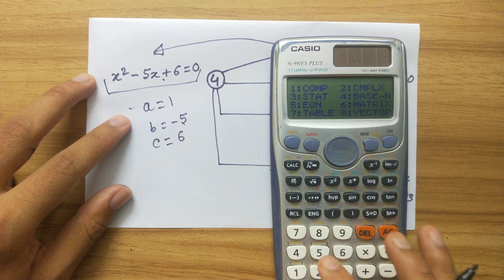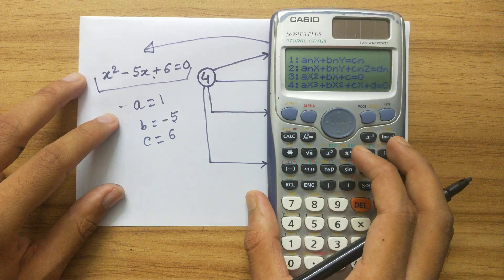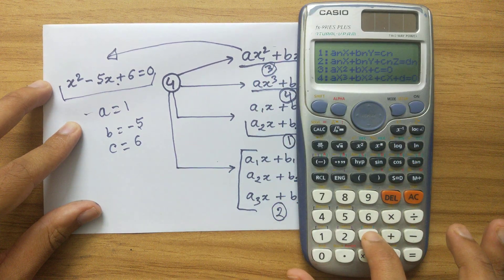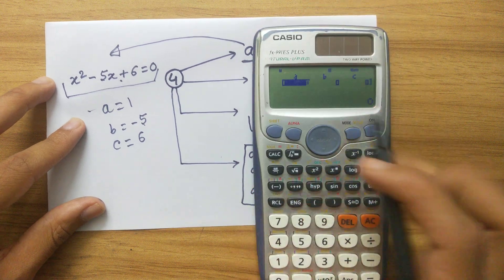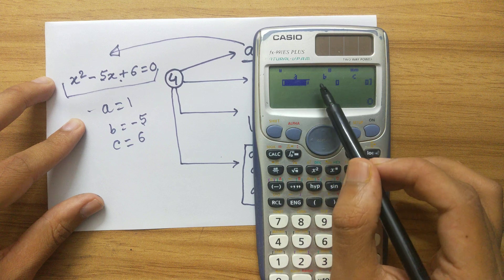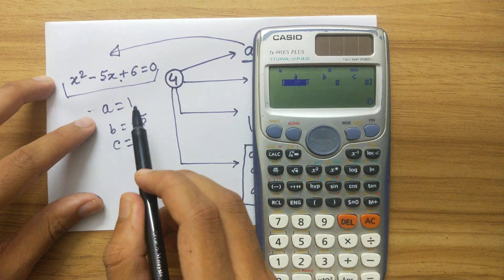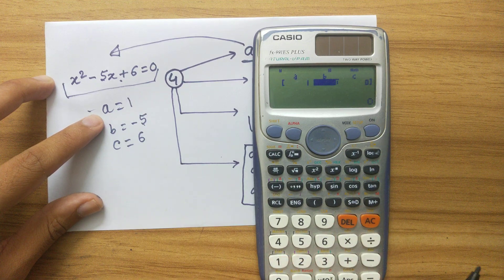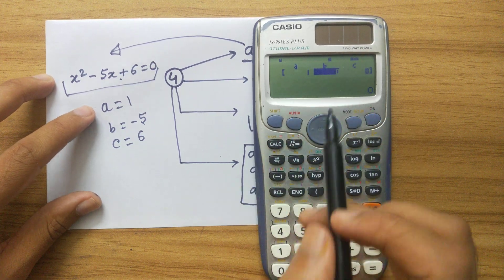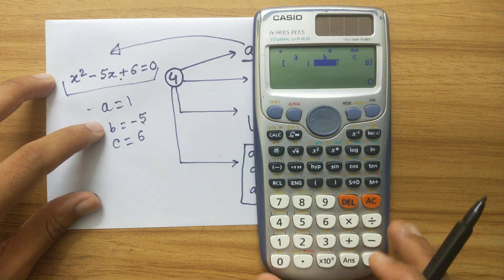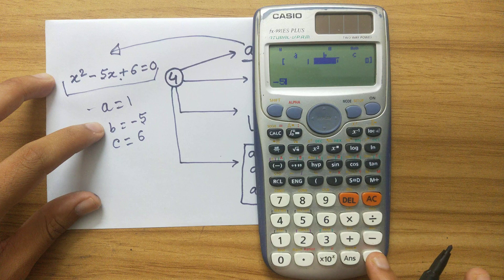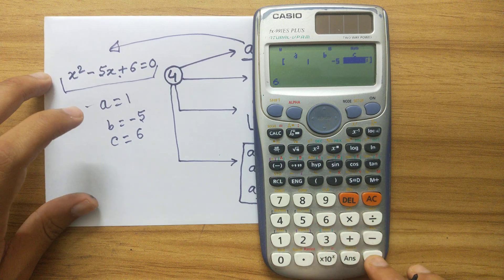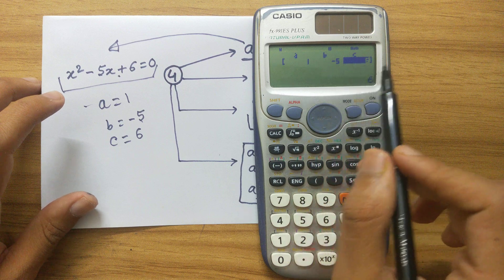Now let's go to the calculator. Press Mode then 5 for Equation, and since we are solving the quadratic type, press 3. You will see prompts to enter A, B, and C. Set A equal to 1 and press equals, then set B to minus 5 and press equals, then set C to 6 and press equals.